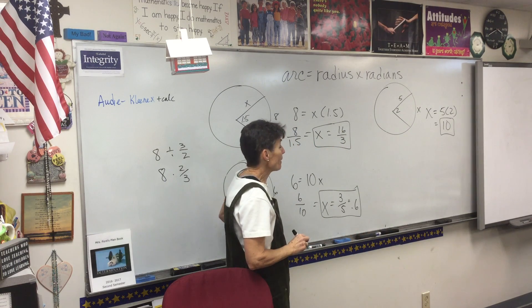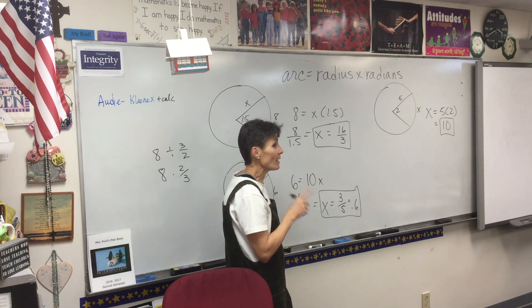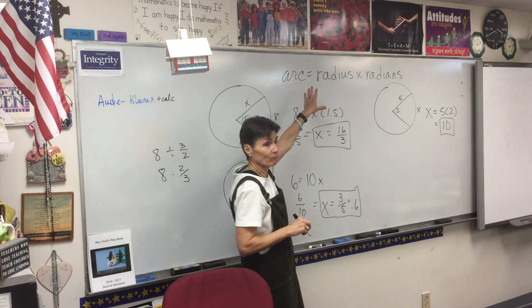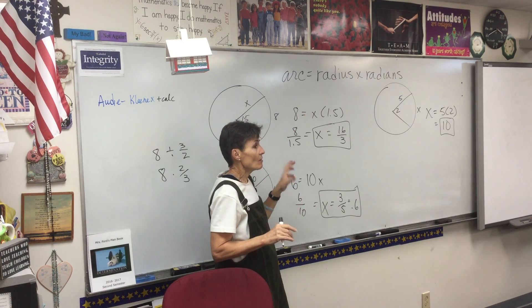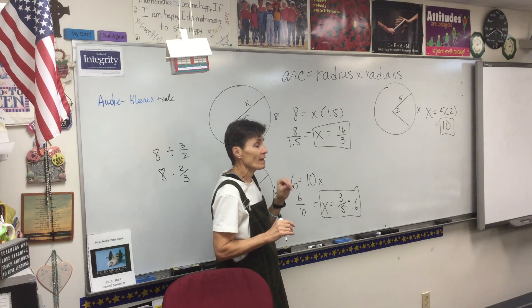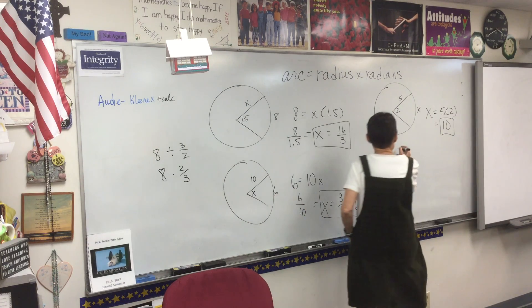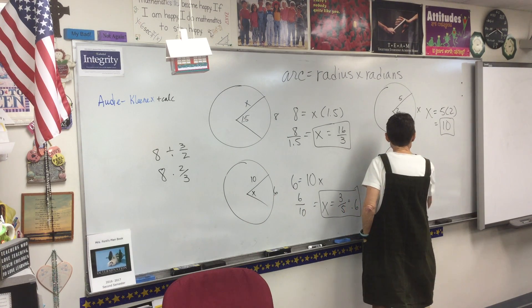What's this one going to say? Arc length equals radius times radians. So 6 equals 10x, so x equals 6 tenths, or 3 fifths, or 0.6, however you want to write it. That's an easy one — arc length equals radius times radians, so the answer is 10. If you know that formula, these are so easy.